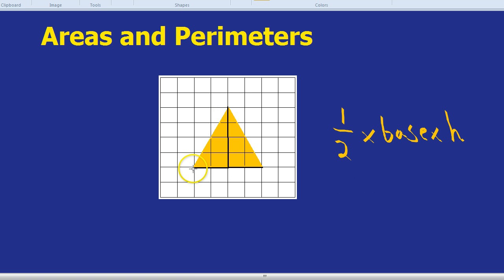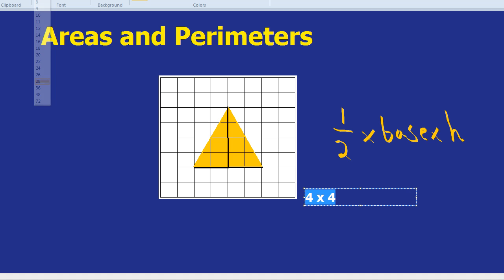What's the length of the height? 4 centimetres as well. So we can do 4 times by 4, divided by 2. 4 times 4 is 16. Let's make that a little bigger.